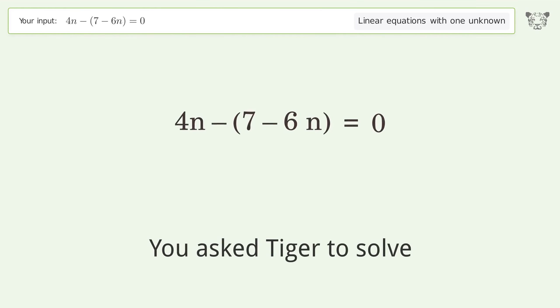You asked Tiger to solve. This deals with linear equations with one unknown. The final result is n equals 7 over 10.